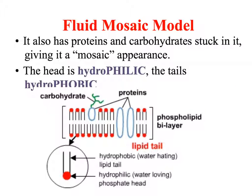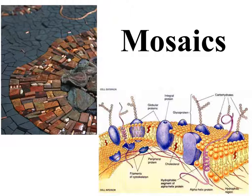Everything within the lipid bilayer has a role. Cell surface proteins allow things to come into and out of the cell. Others are for identification — identifying friend from foe, like bacteria and viruses — and also for hormones, which attach to send their message inside the cell. Hydrophilic means water-loving; hydrophobic means it does not enjoy interacting with water.